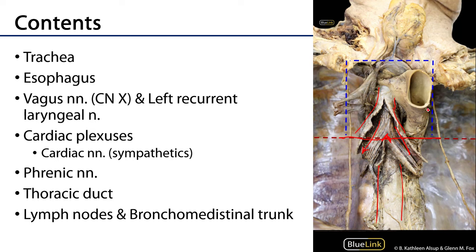We can see the left vagus nerve giving off the left recurrent laryngeal nerve. The right vagus nerve is in closer approximation — a little out of view but wrapping around there. We can see the phrenic nerves on the borders of the superior mediastinum. Moving up in the tracheoesophageal groove and then crossing over from left to right before ascending again is the thoracic duct of the lymphatic system.